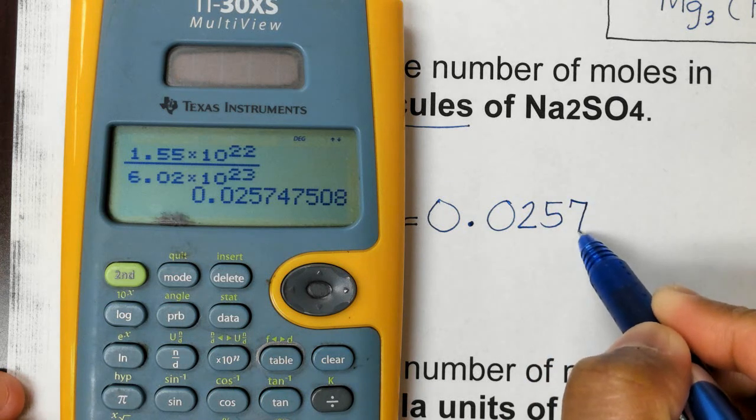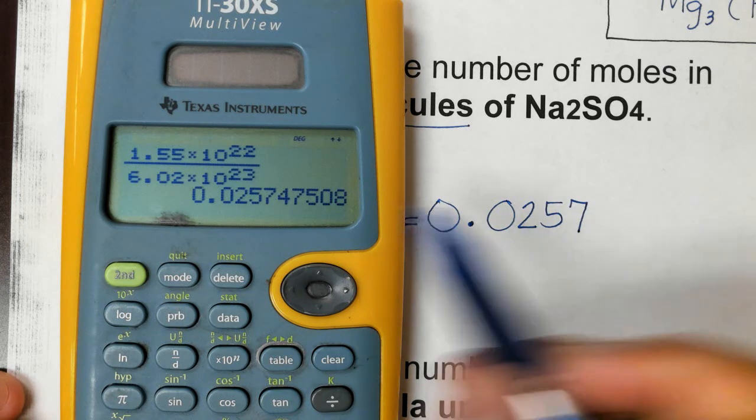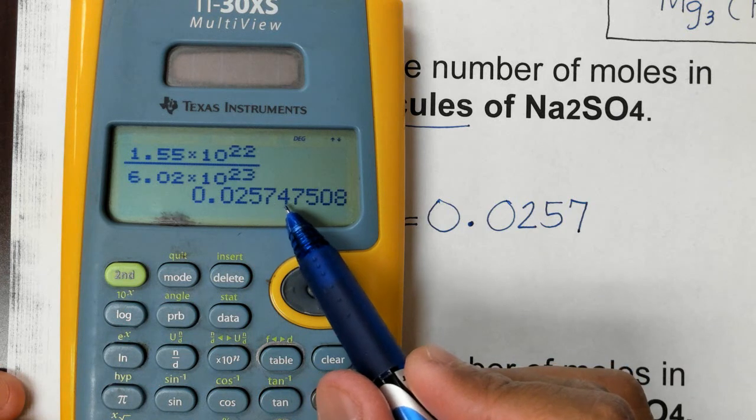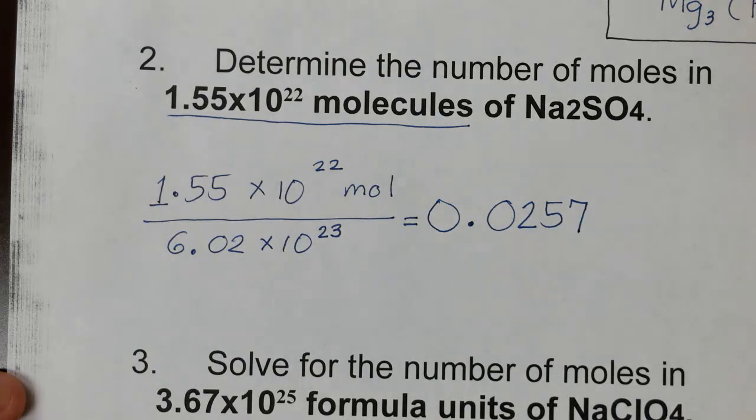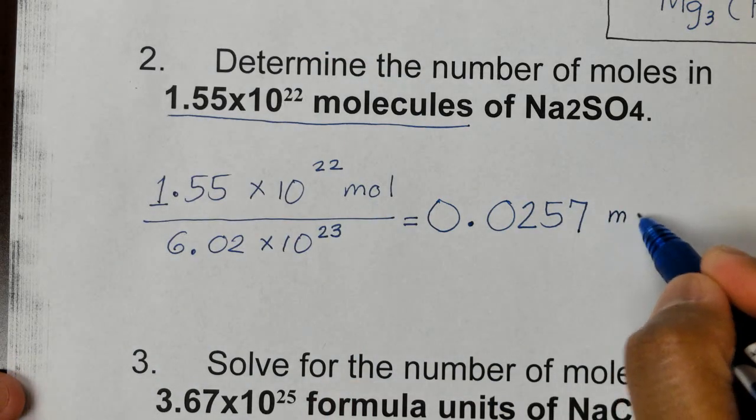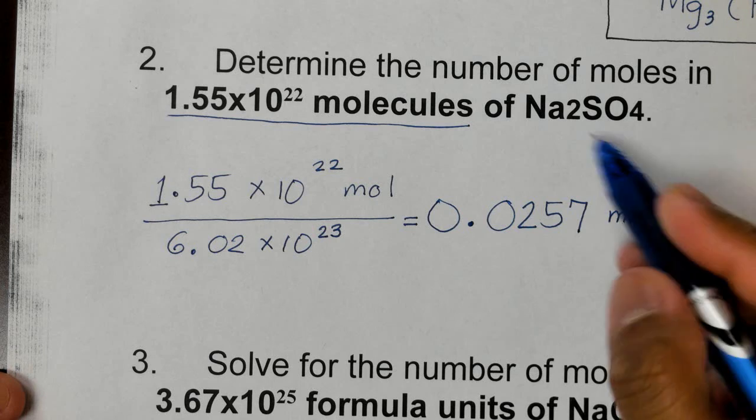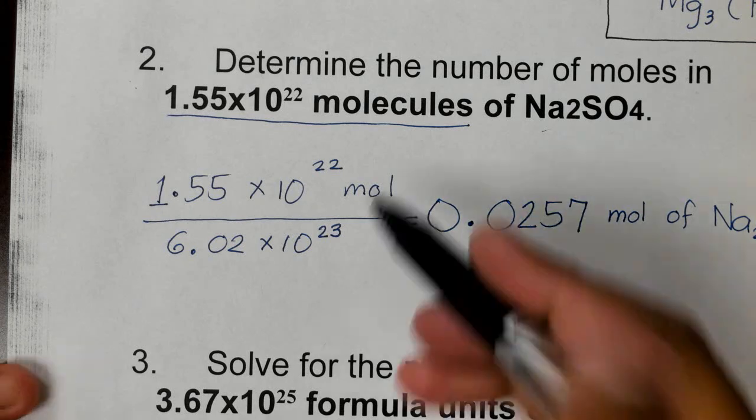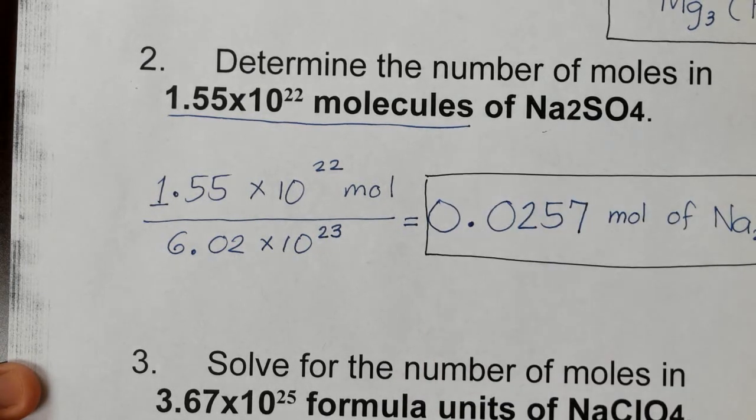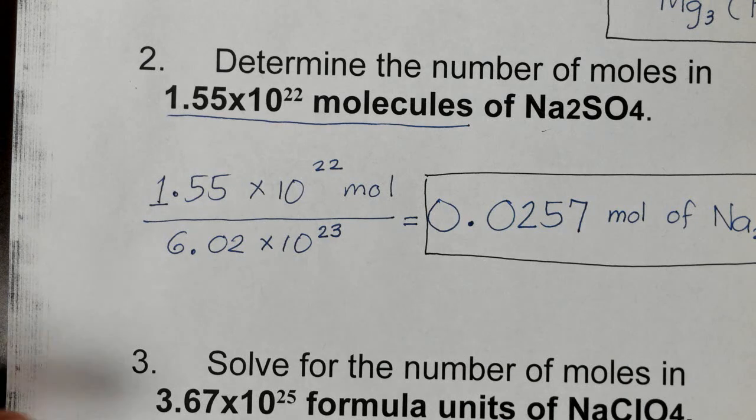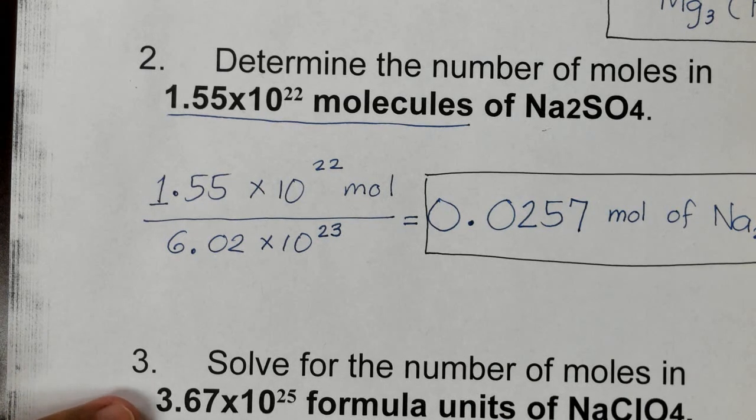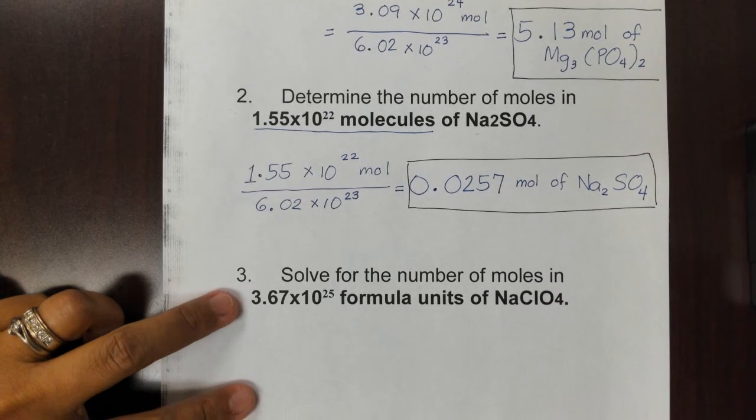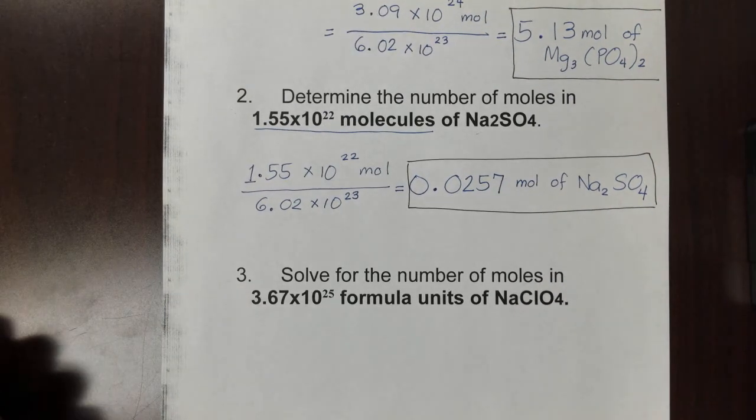So that's going to be 0.0257. We did not round up 7 because it's a 4 after that, so it will just be 7. 0.0257. Now we are going to write the unit, that is mole of the substance Na2SO4. And this is now our complete answer for number two. You may try to solve number three on your own as more practice for you.